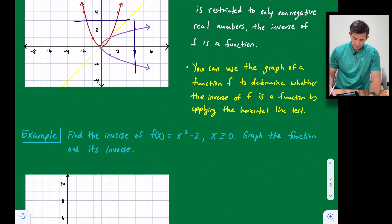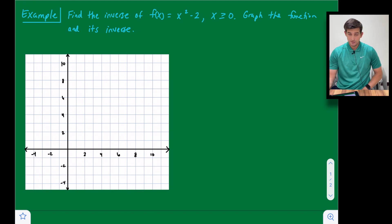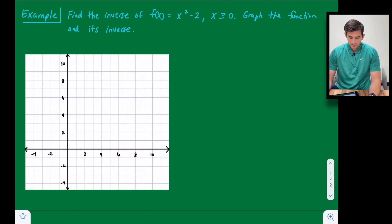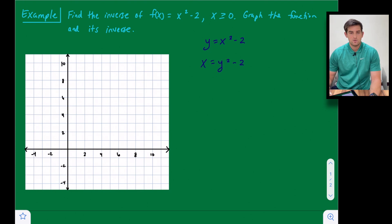Let's look at an example. Find the inverse of f(x) = x² - 2, with the domain restricted to non-negative real numbers, where x ≥ 0, and then graph the function and its inverse. We start by writing y = x² - 2, then switch the roles of x and y to get x = y² - 2. Now we want to undo what's happening to y, the same steps we use when finding the inverse of a linear function.